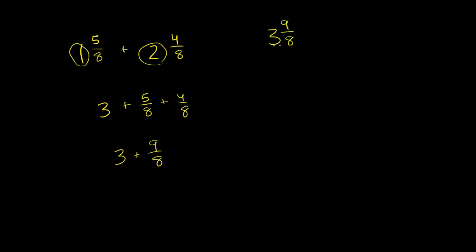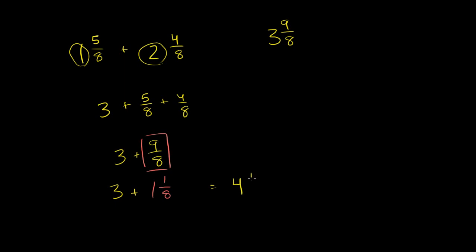It would be strange to say that's the same thing as 3 and 9/8, because you have a mixed number with a whole number and an improper fraction. If you're going through the trouble of making it a mixed number, the fraction should be a proper fraction. So you need to rewrite 9/8 — we know that 9/8 is the same thing as 1 and 1/8, since 8 goes into 9 one time with 1 left over. So this is the same thing as 3 plus 1 and 1/8. Now we add the whole number parts: 3 plus 1 is 4, and then you have your 1/8, giving you 4 and 1/8.